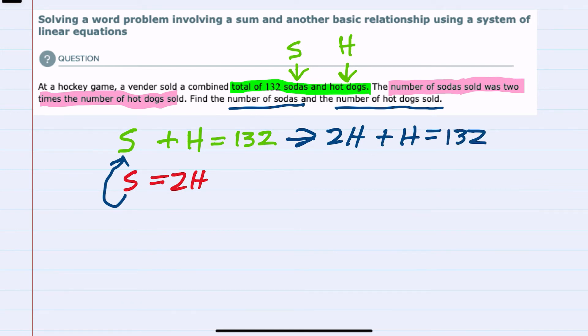And since we now only have one variable, we can solve this. Adding on the left-hand side, 2H plus H is 3H equals 132. And then dividing both sides by 3, I would isolate the H on the left-hand side, leaving me with just H equals 132 divided by 3 is 44.